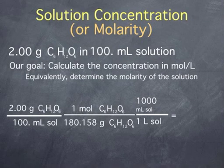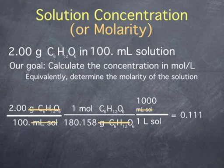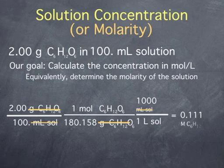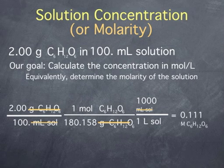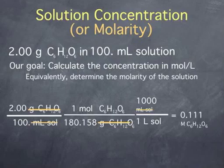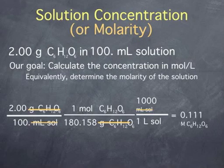Carrying out this math, we get a value of 0.111. In canceling units, we see the final units are moles of glucose per liter of solution, which is equivalent to 0.111 molar glucose. Note that since the experimental conditions were known to three significant figures, both the 2 grams and the 100 milliliters are given to three significant figures. We keep three significant figures in the final result.